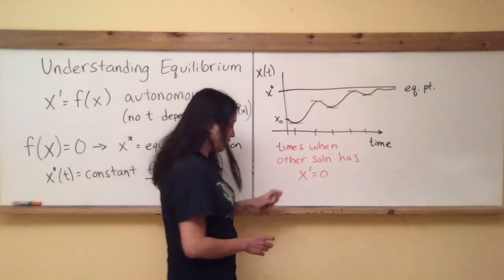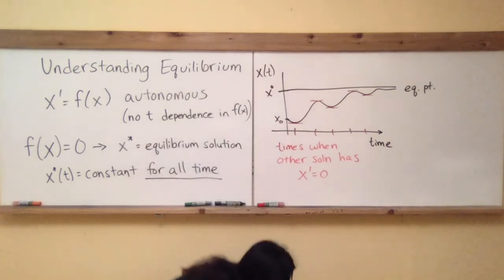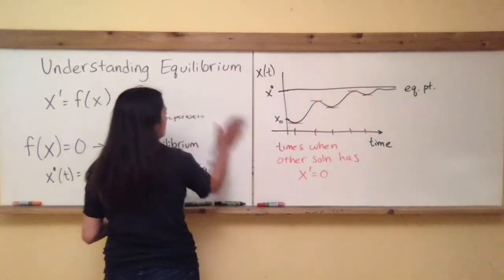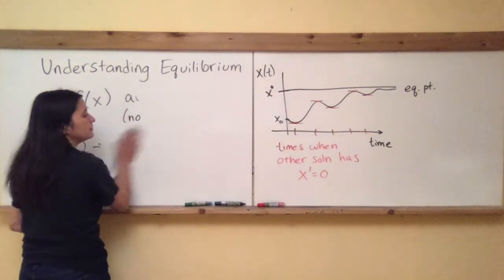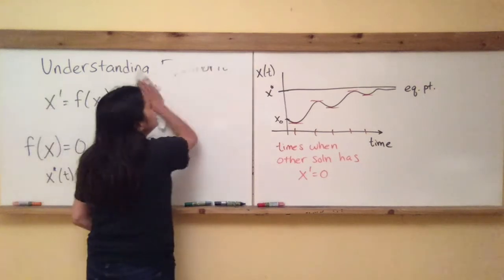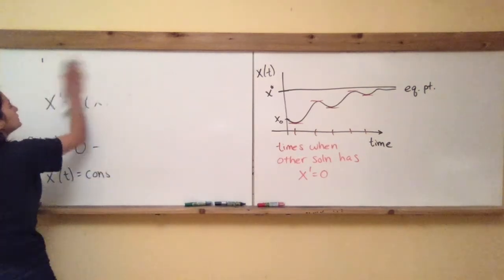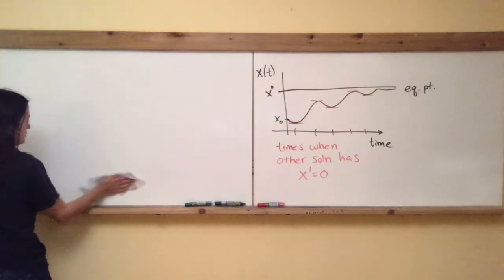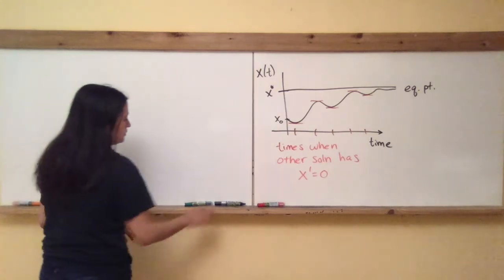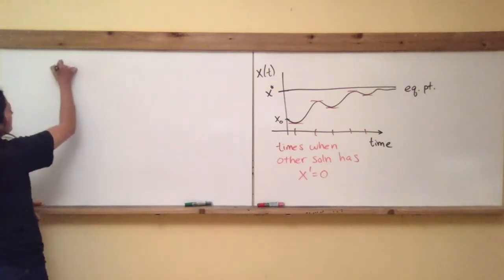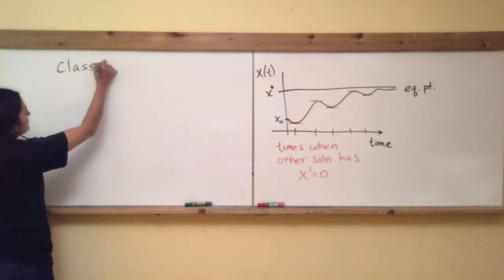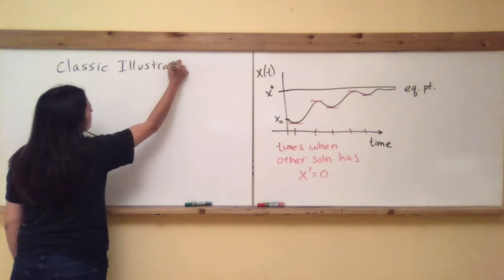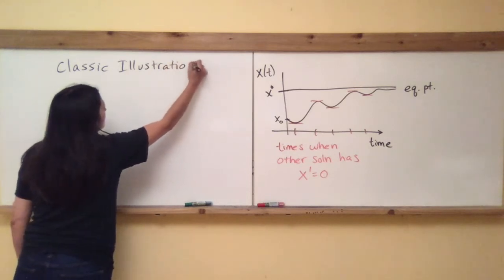I think there's been some confusion about this, and I think it's coming from our classical example of describing stability and instability in terms of the tops and bottoms of a hill — this is a classic illustration of stability.